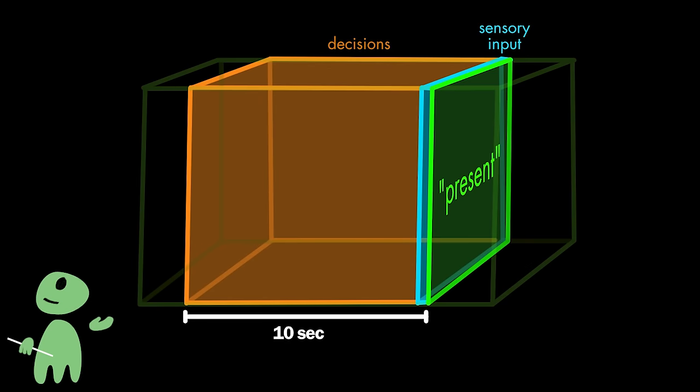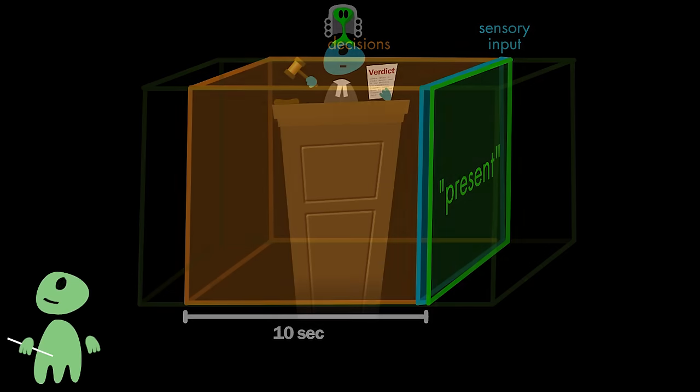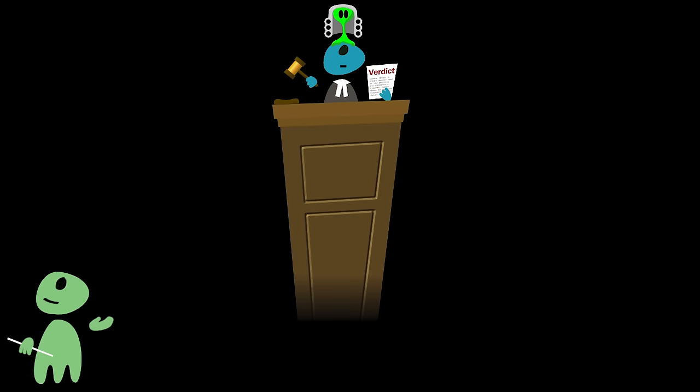In other words, what earthlings perceive as present lags not only behind the actual present but also behind their own decision making, and what they call free will, is merely the feeling they have after their brain has made a decision. One could say that earthlings' consciousness is like a show trial where all the evidence has been redacted beforehand, and the decision has already been made.